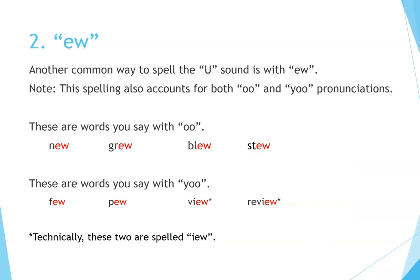Number 2: E-W. Another common way to spell the OO sound is with E-W. This spelling also accounts for both OO and U pronunciations. Words you say with OO: new, grew, blue, stew. Words you say with U: view, pew, review. Technically, those last two are spelled I-E-W.